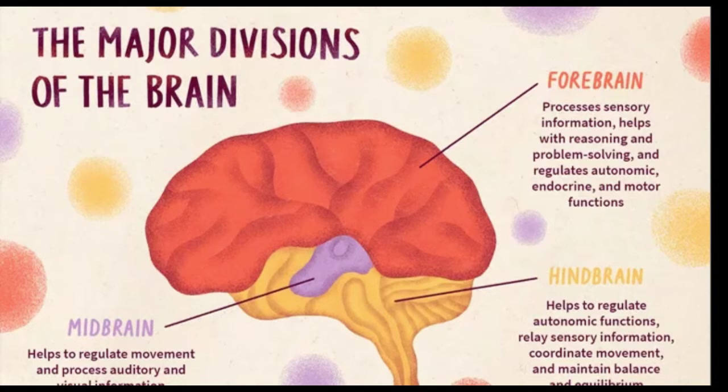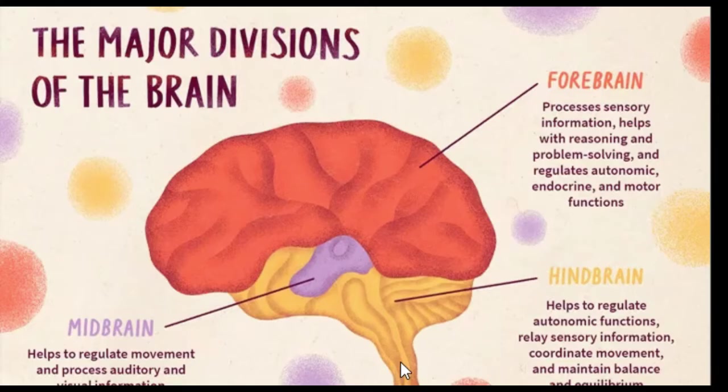The hindbrain helps to regulate autonomic functions and relays sensory information, coordinates movement, and maintains balance and equilibrium. The midbrain helps to regulate movement and processes auditory and visual information.